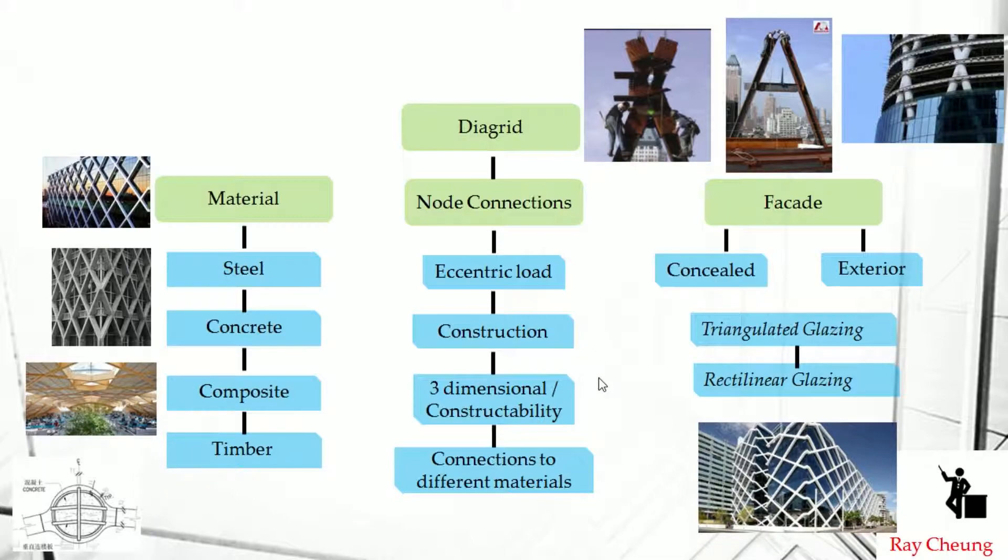Nowadays they have different forms to produce, and that's why we need to make sure the connections should be controllable. Their connection of the loop is also in three dimensions. Sometimes they keep on changing the diagrid system - sometimes they will use the concealed one, covered by a curtain wall, and sometimes they are like the exoskeleton exposed.